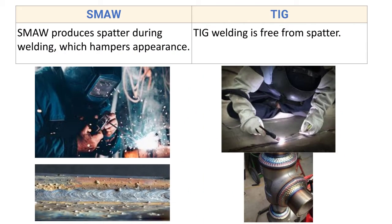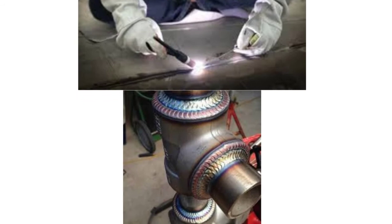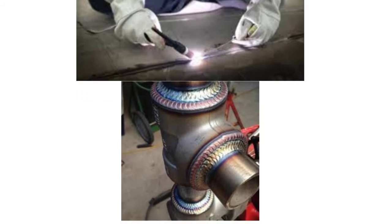TIG welding is free from spatter. Here you can see the tungsten inert gas welding process and the resulting weld — no spatter is produced during TIG welding.